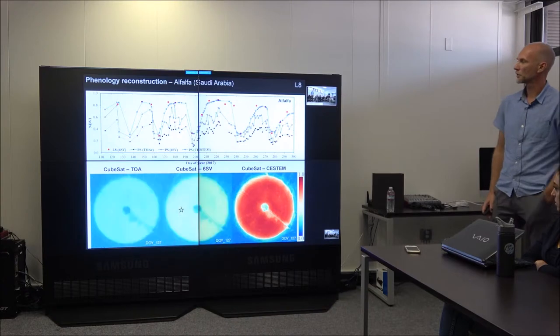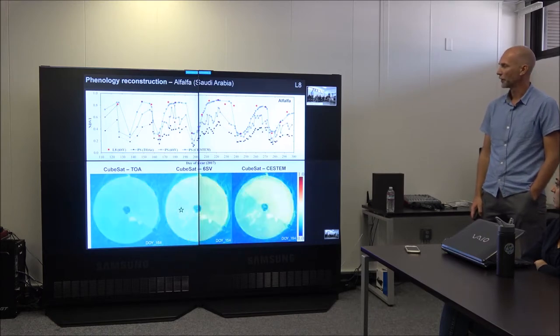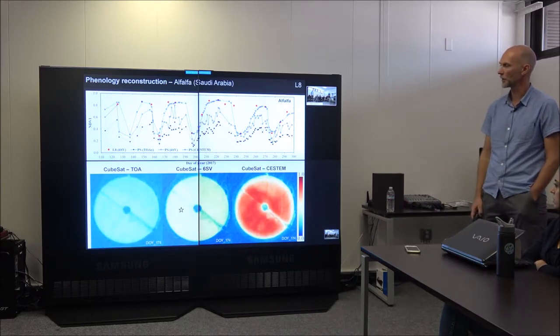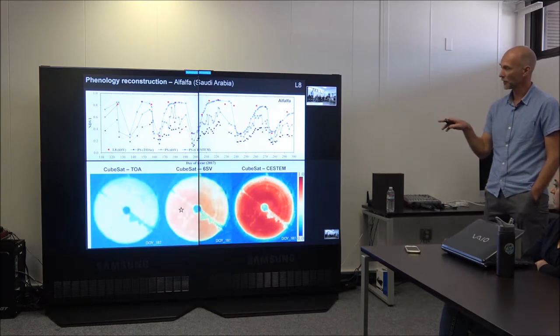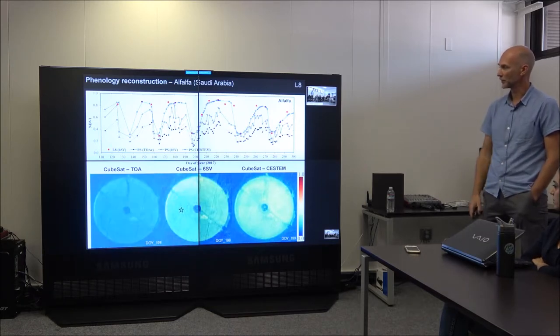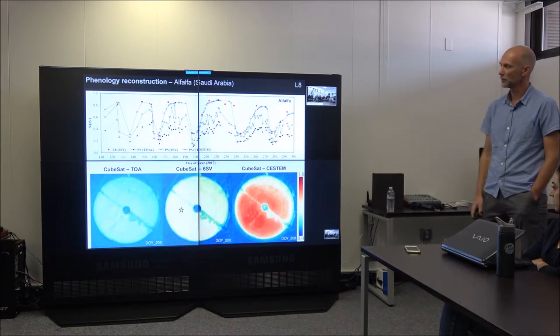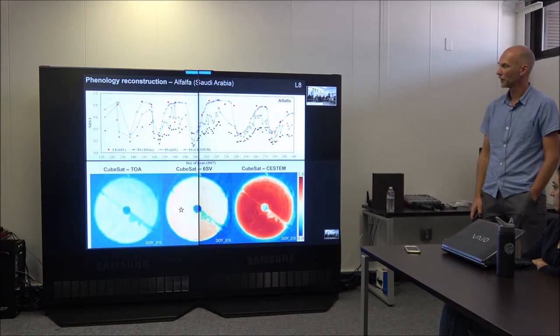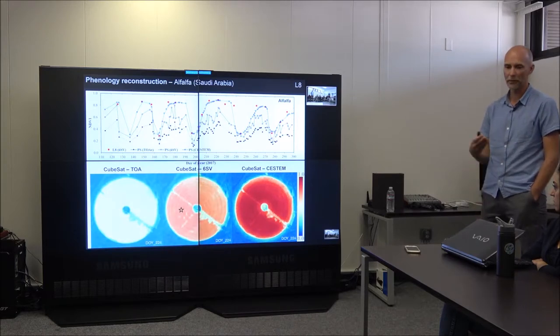So, these are our results. This is a six month period for a multi-cut alfalfa field. I've plotted both the CubeSat data, the Planet CubeSat data, based on top of atmosphere surface reflectance, as well as the CESTEM-corrected data. So you see, there's a lot of noise in the raw data. But after applying CESTEM, you kind of bring it into place, you get a much better, a more Landsat consistent estimate of the NDVI. And you get a better kind of sense of the phenology. It's able to reconstruct the phenology that you would expect for alfalfa. And you can better be able to kind of determine the exact timing of phenological transitions, such as harvesting, which otherwise is quite difficult.